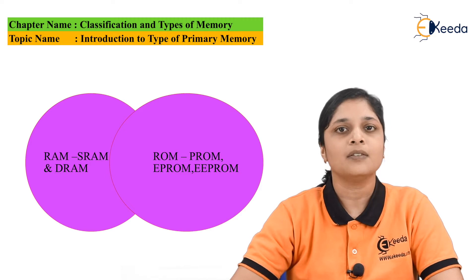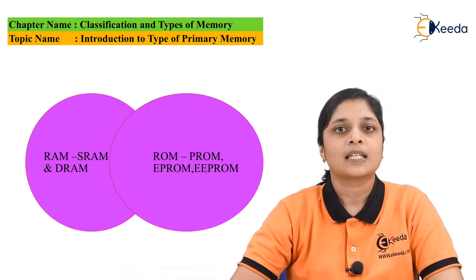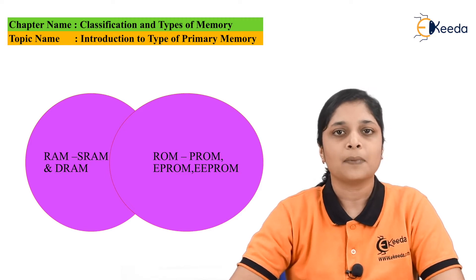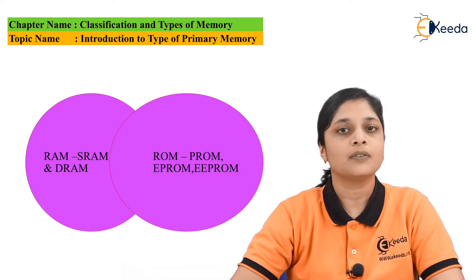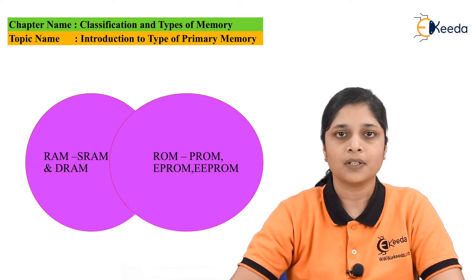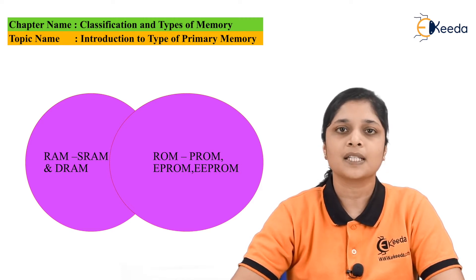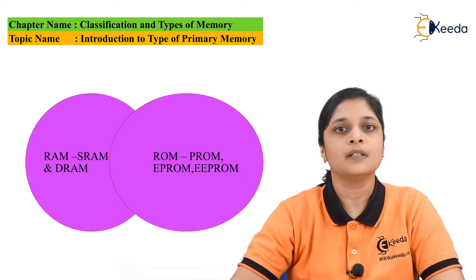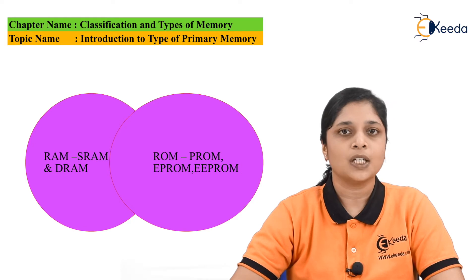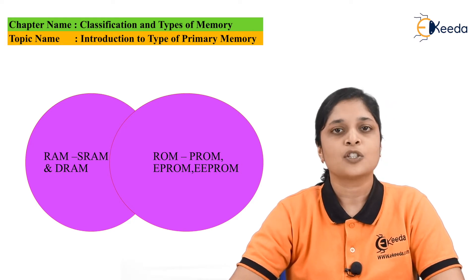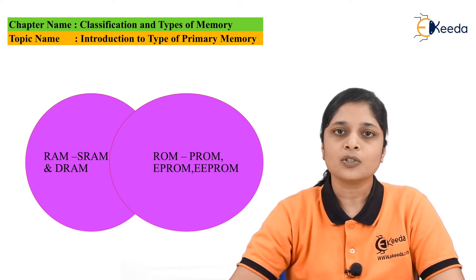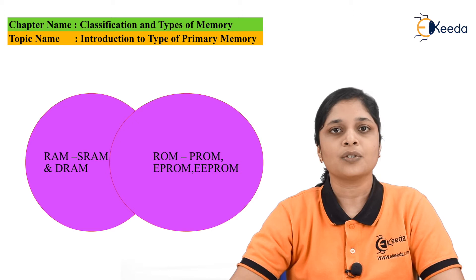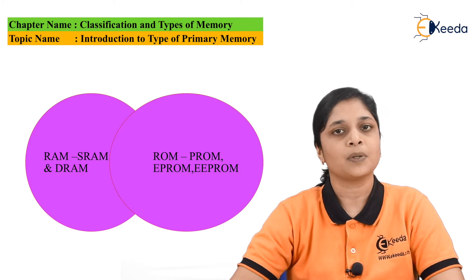The second type is EPROM, that is Erasable Programmable Read-Only Memory. The third type is EEPROM, that is Electrically Erasable Programmable Read-Only Memory. So this is all about the classification of the primary memories.